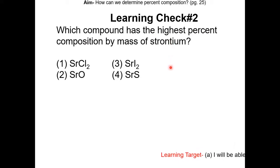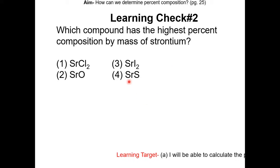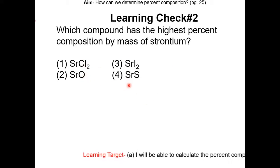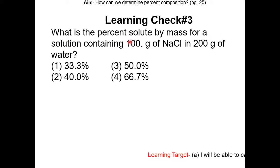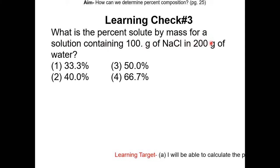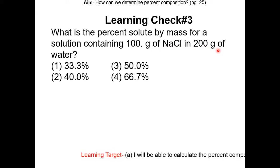You have to calculate the percent composition of sodium in each compound. If you do that, the one that has the highest is choice 2. Learning check number 3: what is the percent solute by mass for a solution containing 100 grams of NaCl and 200 grams of water? Pause the video and resume once completed.